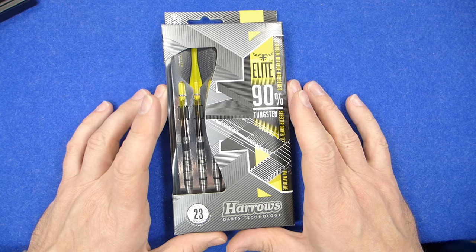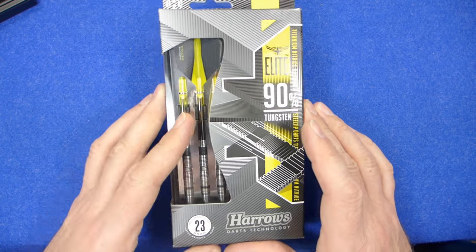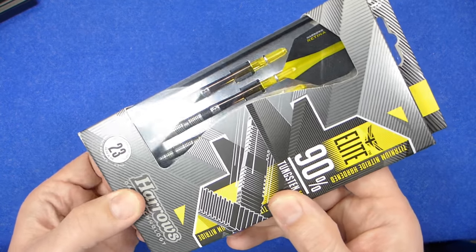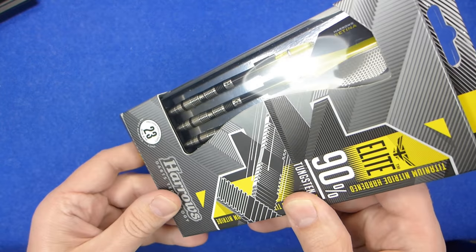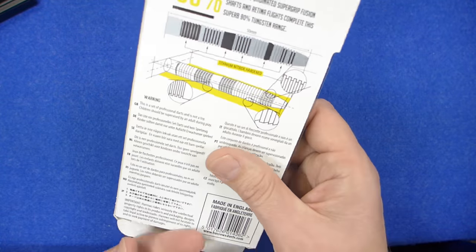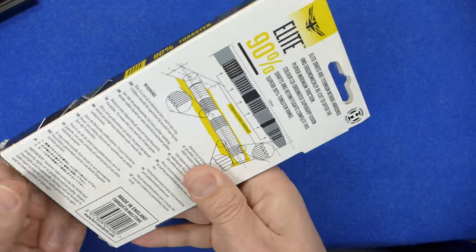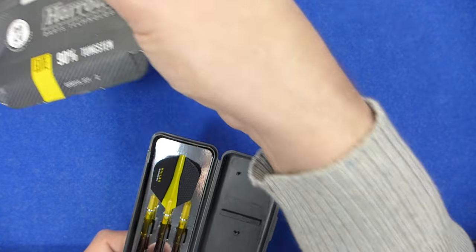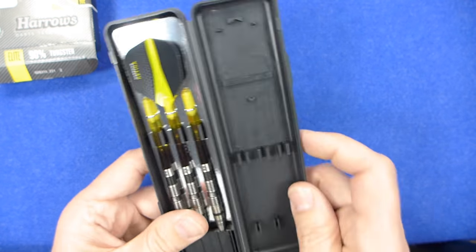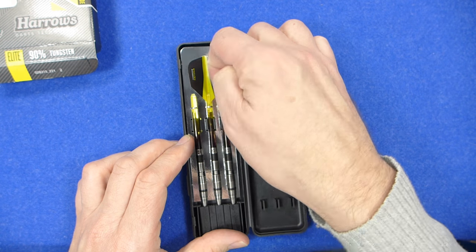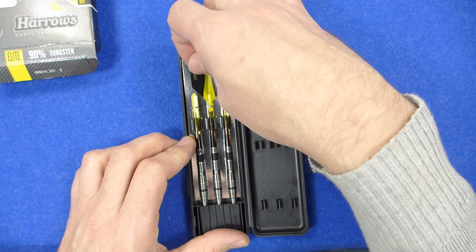The darts come in the normal Harrows slimline packaging. It's got a very nice graphic representation on the box and on the back it also has a picture of the darts detailing the grips on it.